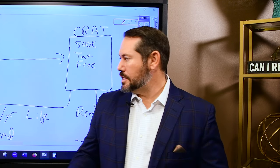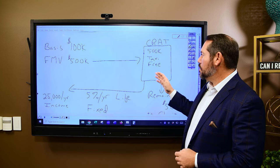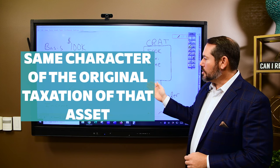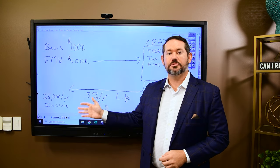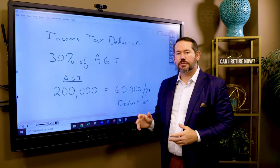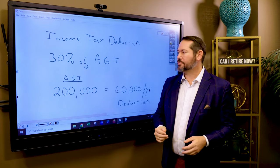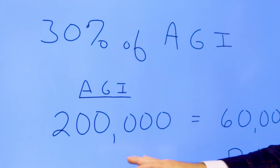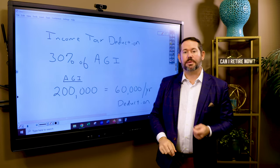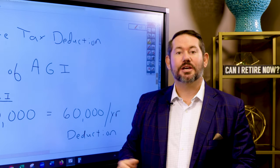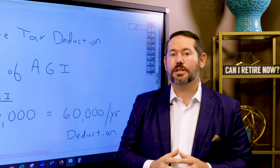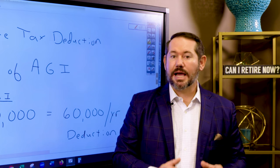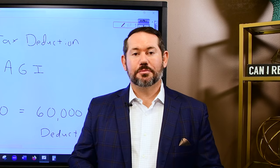One more thing to note: even though we sell the stock tax-free, when we start to receive income it comes to us in the same character as the original taxation of that asset. That means the $25,000 per year will be subject to capital gains tax. Now for the income tax deduction calculation: the AGI limitation for publicly traded securities at long-term capital gains is 30%. So 30% multiplied by your AGI — say $200,000 — equals $60,000 maximum income tax deduction today. But in our example the deduction was about $172,000, so the law allows you to carry that forward for up to five years: $60,000 today, $60,000 next year, and $52,000 in the final year.